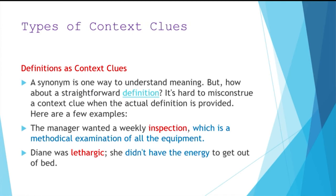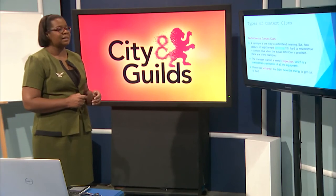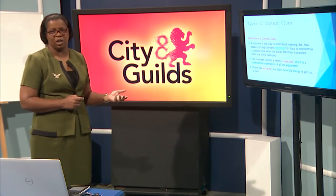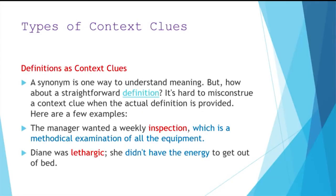You can also get definitions as context clues — similar to what you'd find in a dictionary. A synonym is one way to understand meaning, but how about a straightforward definition? It's hard to misconstrue a context clue when the actual definition is provided. For example: the manager wanted a weekly inspection, which is a methodical examination of all the equipment. So if you're meeting the word inspection for the very first time, the writer has assisted you by explaining exactly what it means.